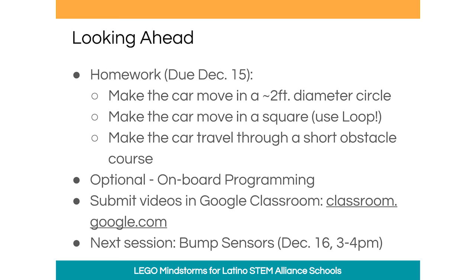Looking ahead to next week, we have some homework assignments for you. These are optional, but we highly encourage you to complete this so that you keep on building your skills. The first task is to make the car move in a two feet diameter circle. The circle doesn't need to be exactly two feet, but just to keep it on the table or keep it a manageable size, we encourage using about two feet. The second homework is to use loop to make the car move in a square pattern. The third one is to create a short obstacle course in your classroom and make the car travel through the course. The course could be something very simple like putting a few paper cups on the table and making the car drive through it without hitting the cups.